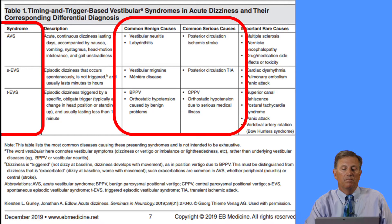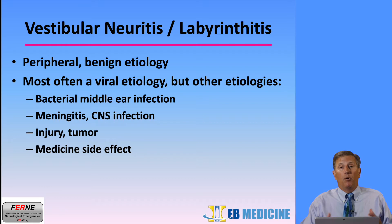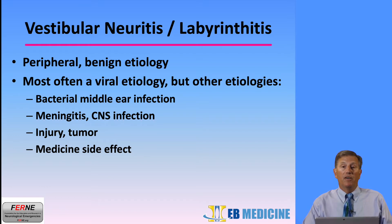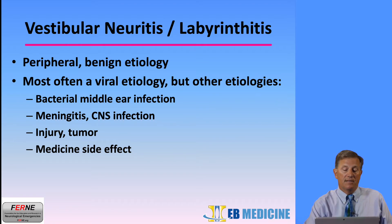Acute vestibular syndrome. I've got the red rectangle around the common benign causes, the common serious causes, and some rare causes. Vestibular neuritis or labyrinthitis is a peripheral benign etiology of dizziness. It's most often a viral etiology, but other etiologies can cause vestibular neuritis or labyrinthitis, including bacterial middle ear infection, meningitis, CNS infection, injury or tumor, and or a medicine side effect.